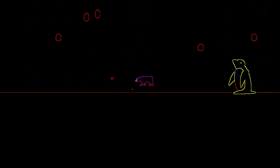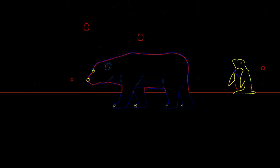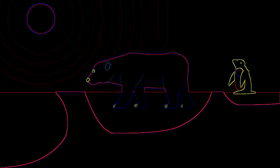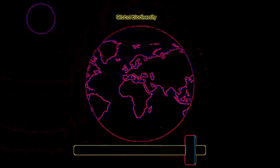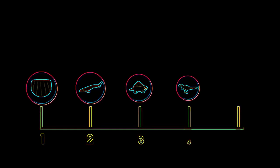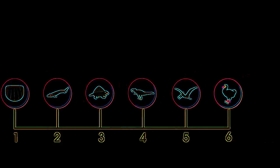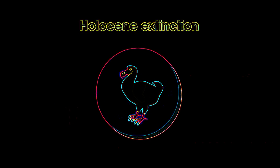It's important to know that biodiversity is not a static measure, but is responsive to numerous factors, including climate change. In fact, global biodiversity is generally thought to be declining right now. Biodiversity has declined in the past and a total of five major extinction events have occurred. Currently, we are in the planet's sixth major extinction event, known as the Holocene extinction.